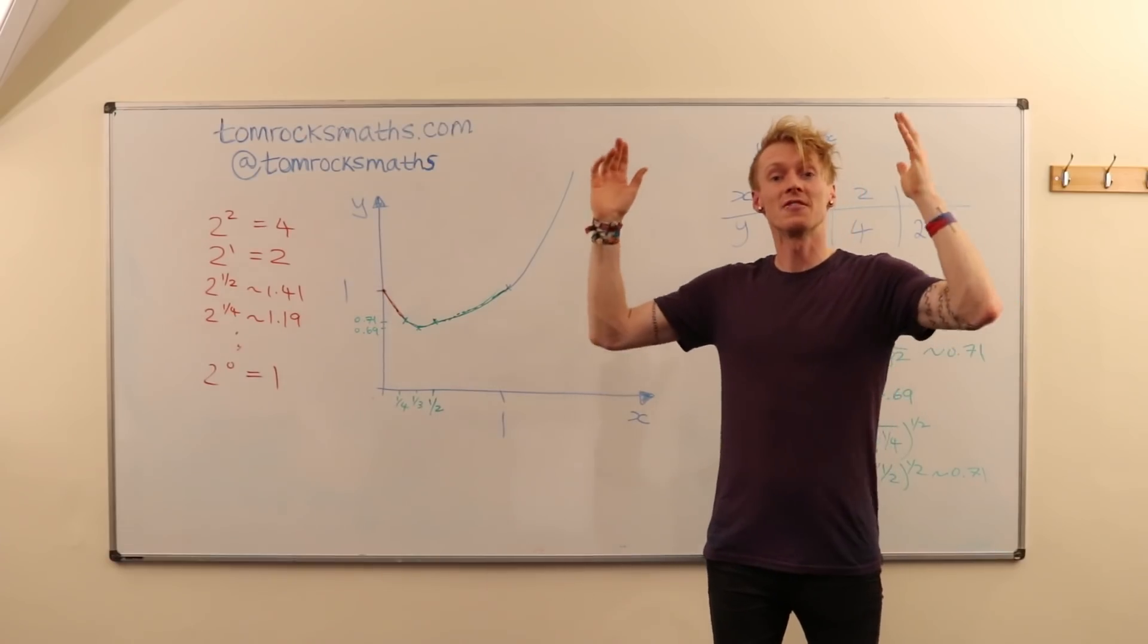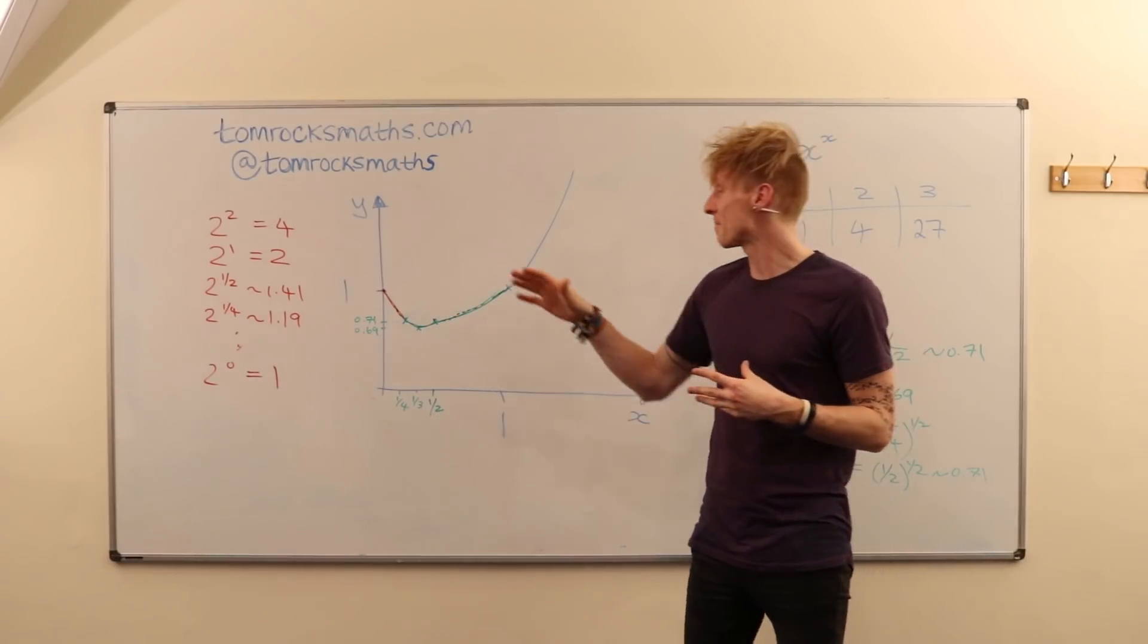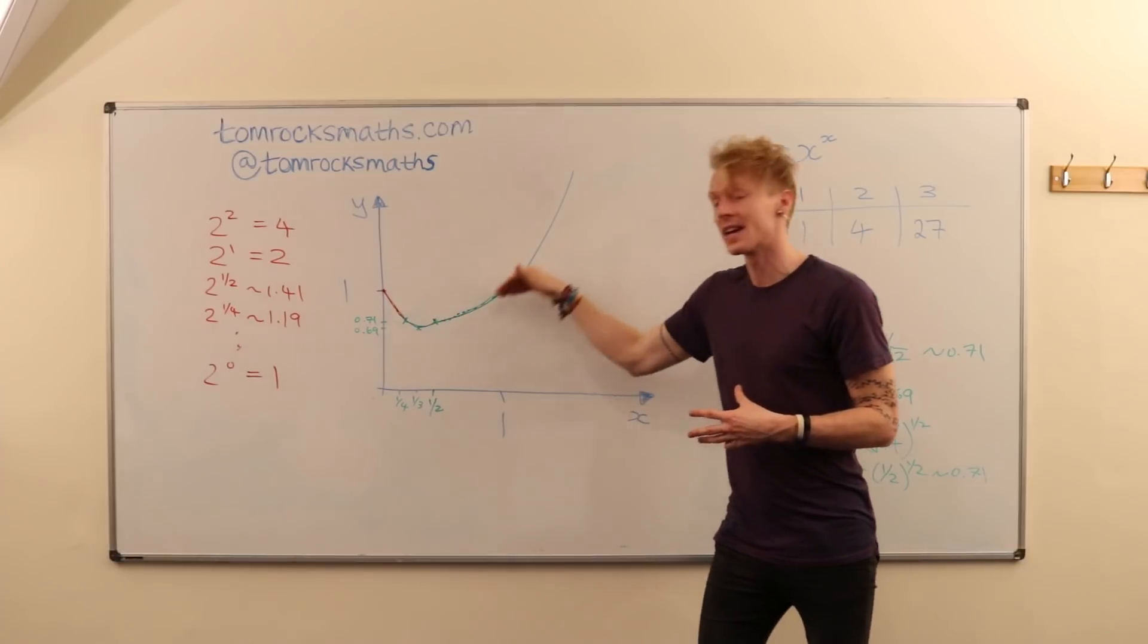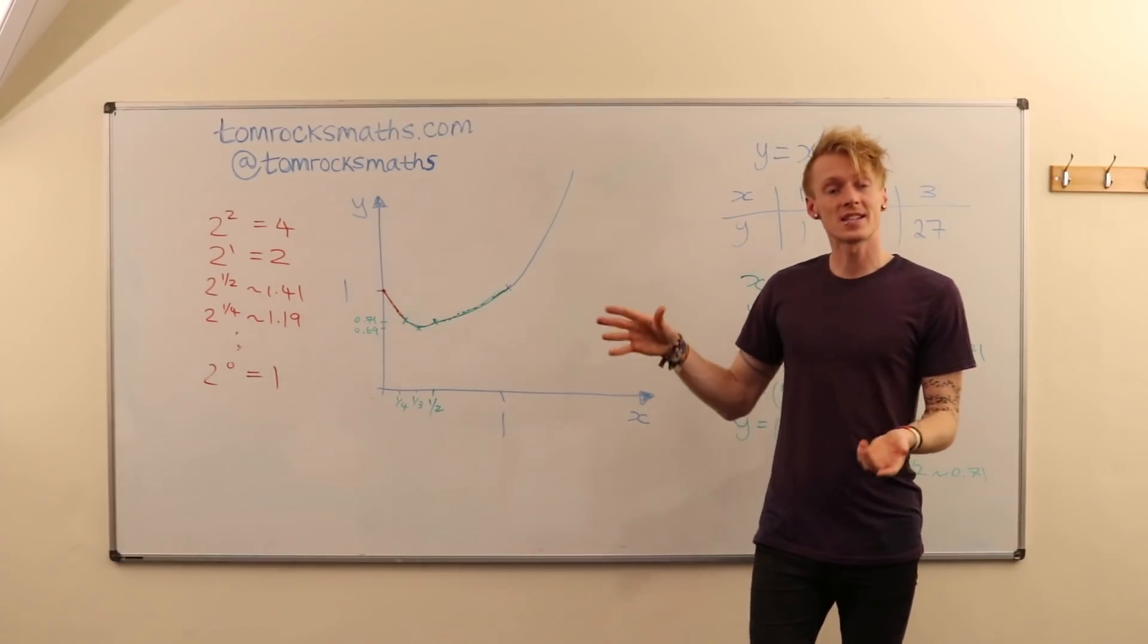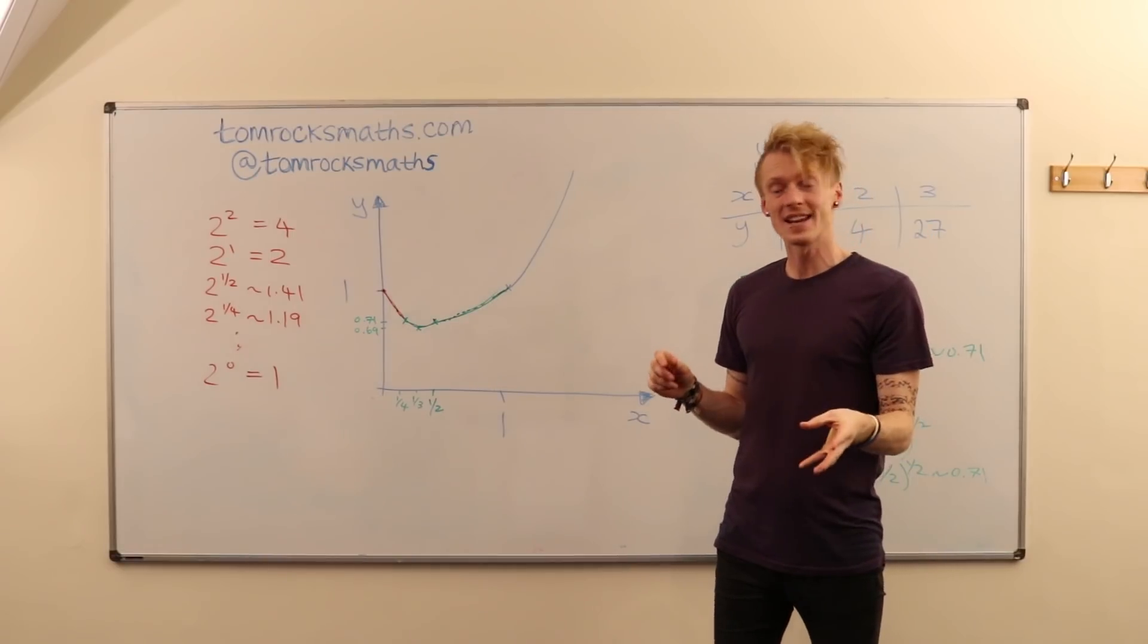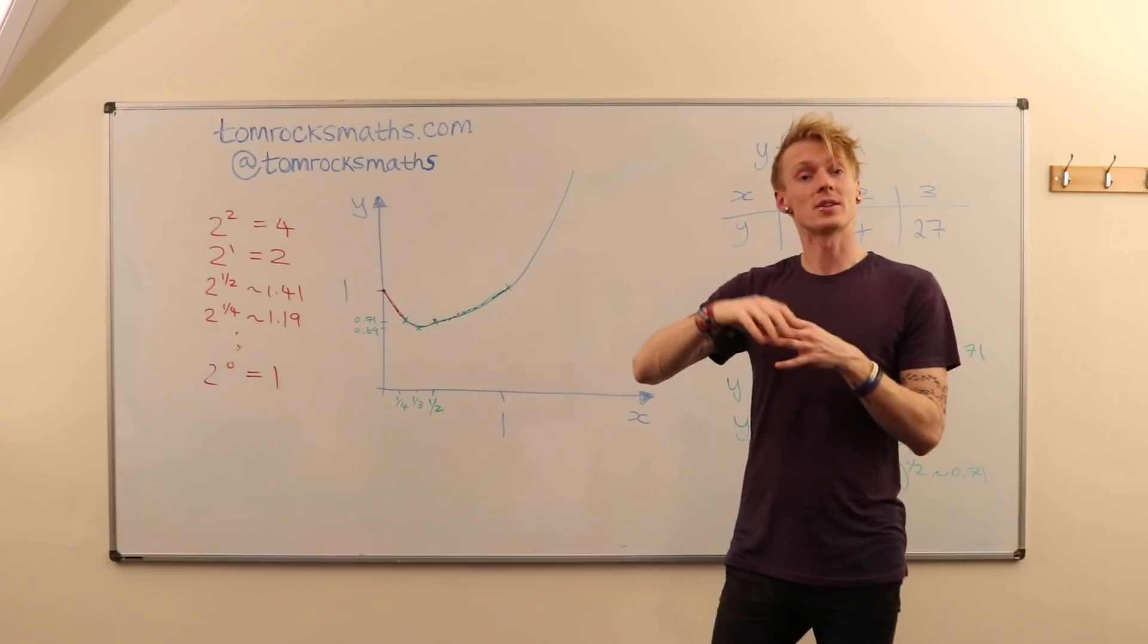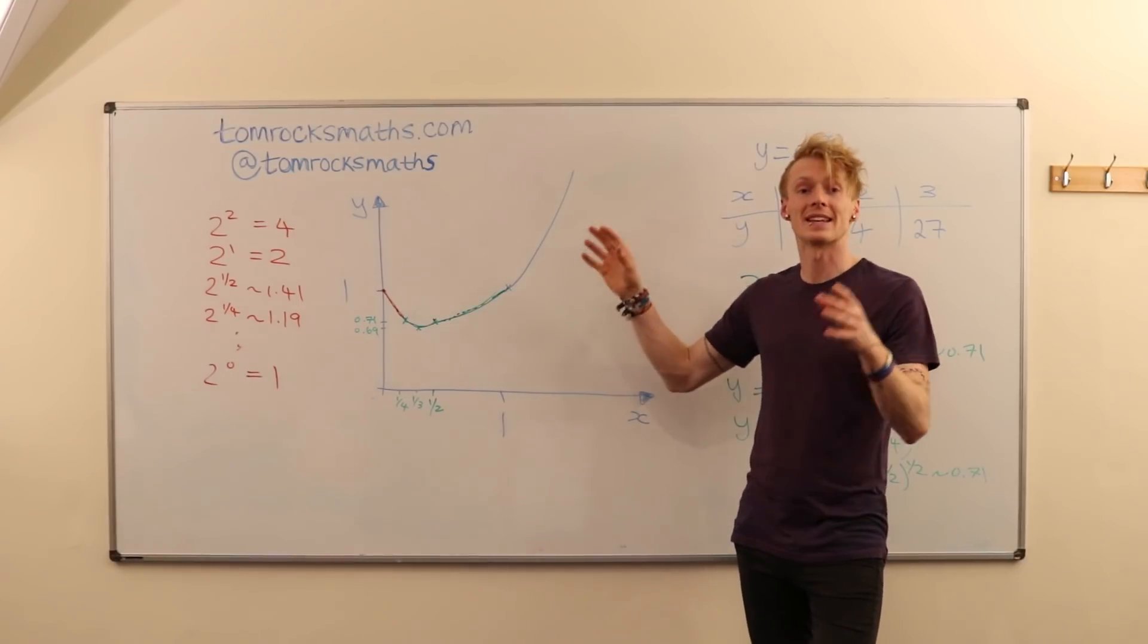So there you have it. The full graph of y equals x to the power x, drawn step by step, and then patched together to get this lovely tick shape. This is of course only for positive values of x. It can be extended to negative values of x, but things get very tricky. And we have to go into complex numbers, so I am going to leave it there.